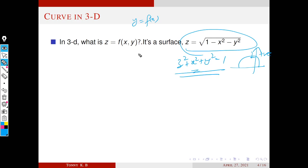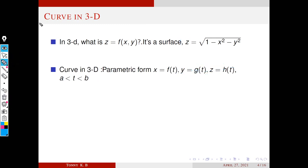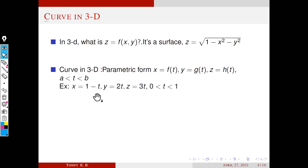So our aim is to find how to represent a curve in 3D space. To represent a curve in 3D, we use the parametric form, similar to the 2D case. We take x equal to f of t, y equal to g of t, and z equal to h of t, where f, g, h are some functions and t is between a and b. For example, x equal to 1 minus t, y equal to 2t, and z equal to 3t, where t is between 0 and 1, represents a curve in 3D.